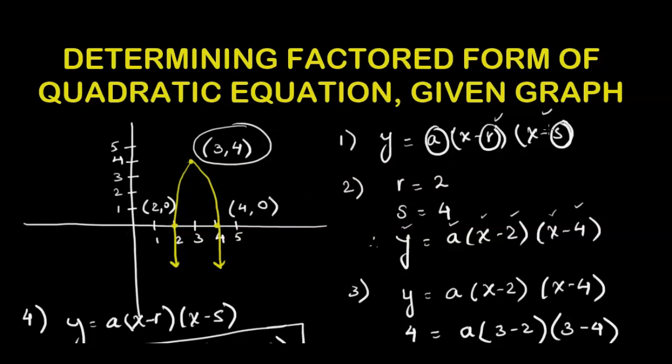Once we fill in the value of r and s, we would then find another point on the graph that we can put in as x and y in the factored form of the general equation so as to calculate the value of a in order to get the final answer.